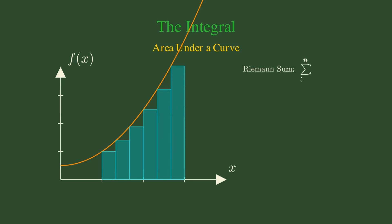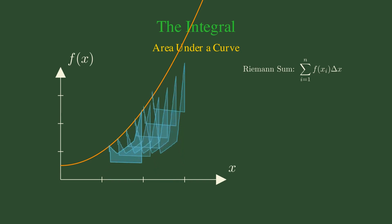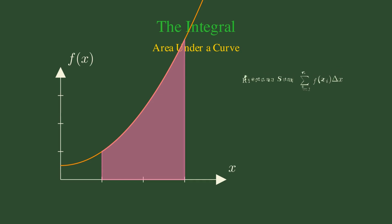The integral is defined as the limit of this process, the limit of the Riemann sum. As the number of rectangles approaches infinity and their width approaches zero, this gives us the definite integral. The integral from A to B of f(x)dx equals the limit as n approaches infinity of the sum of f(xi) times Δx.